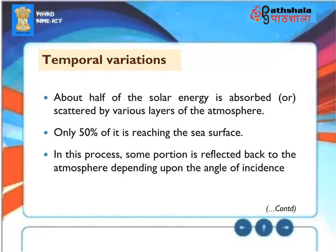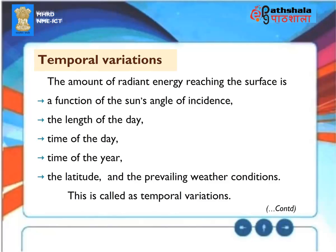Temporal Variations: About half of the solar energy is absorbed or scattered by various layers of the atmosphere, and only 50% reaches the sea surface. In this process, some portion is reflected back to the atmosphere depending upon the angle of incidence. The amount of radiant energy reaching the surface is a function of the sun's angle of incidence, the length of the day, time of the day, time of the year, the latitude, and the prevailing weather conditions. This is called Temporal Variation.